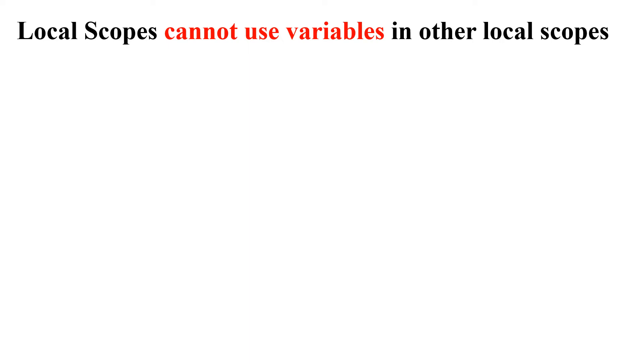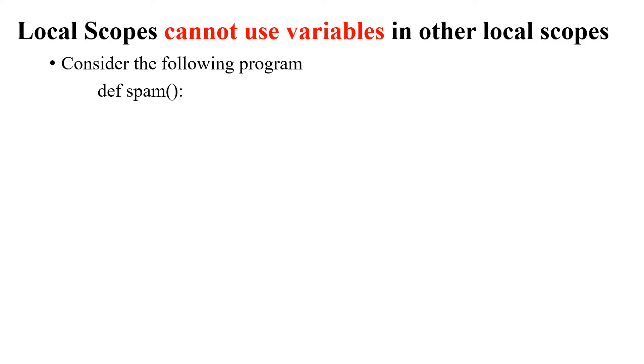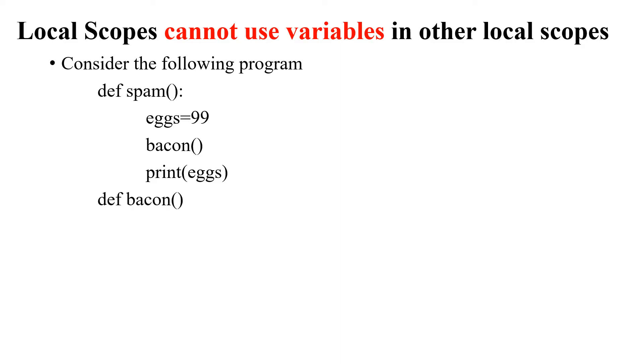Next: local scopes cannot use variables in other local scopes. That means if I have two local functions, each with local variables, I cannot access one variable from another function. Consider the following program: I define function spam, where x is assigned the value 99. Inside spam, I call the function bacon, then print the value of x. The function bacon is defined separately, where the variable eggs is assigned the value 100.